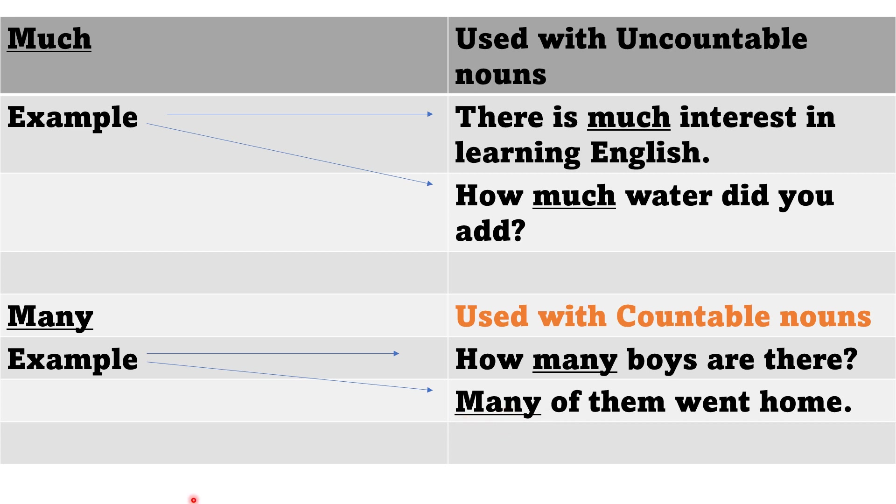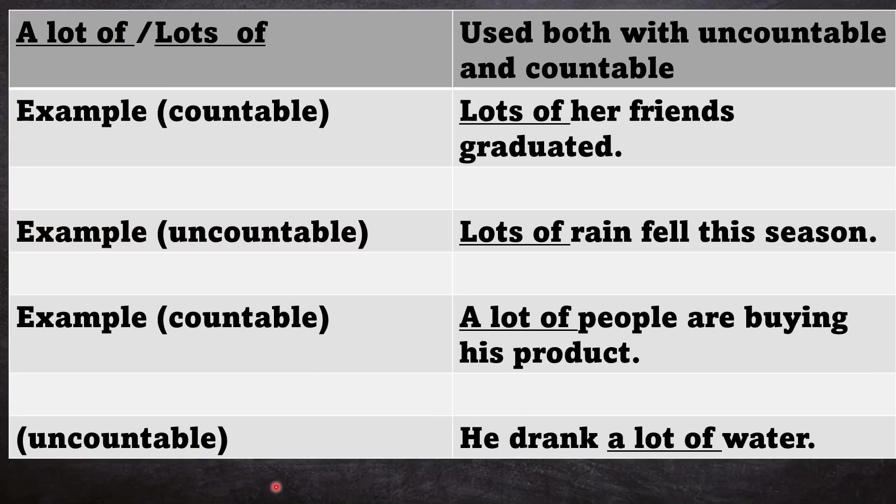We have a lot of or lots of used both with uncountable and countable. Example: lots of your friends graduated, so this is countable. The uncountable example is lots of rain fell this season. And the countable example: a lot of people are buying this product. Uncountable: he drank a lot of water.